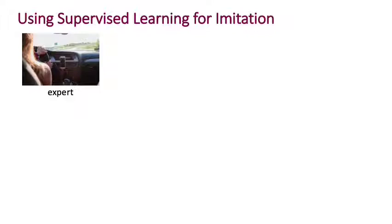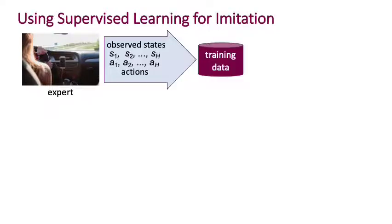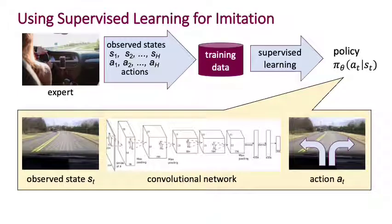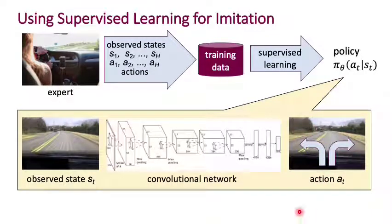In practice, you would have an expert collect data driving a car. You take the states and actions executed by the expert, make them your training dataset, and run supervised learning on it — training your policy pi_theta of a_t given s_t. Typically you'd use a convolutional network if your input states are images, whose output is an action such as heading left, right, driving straight, or the full driving action including steering, throttle, and brake.